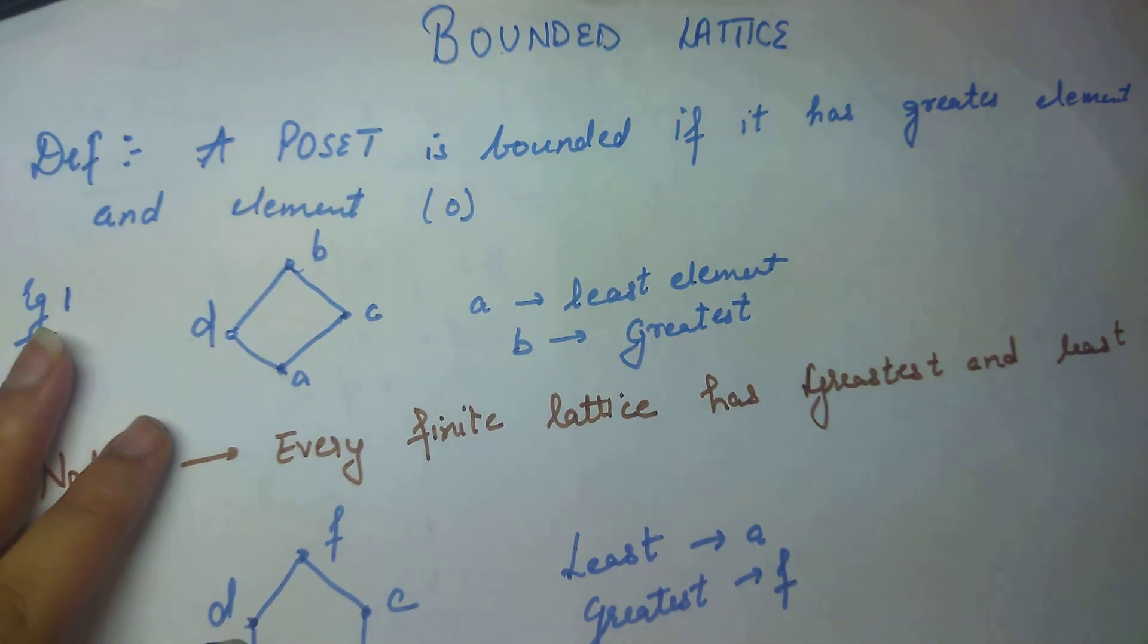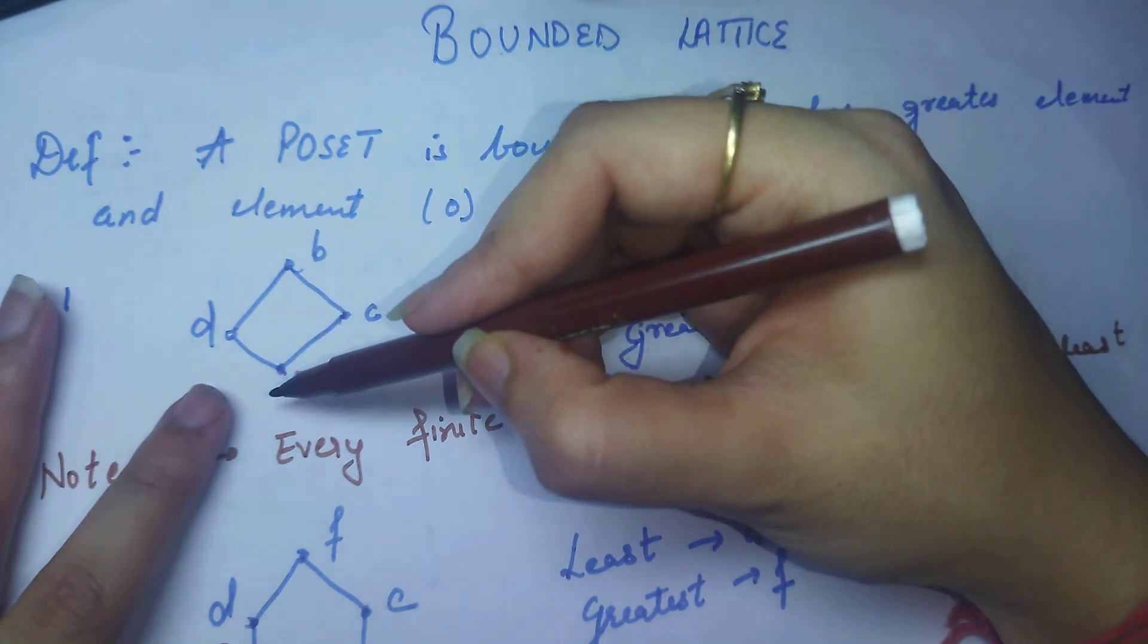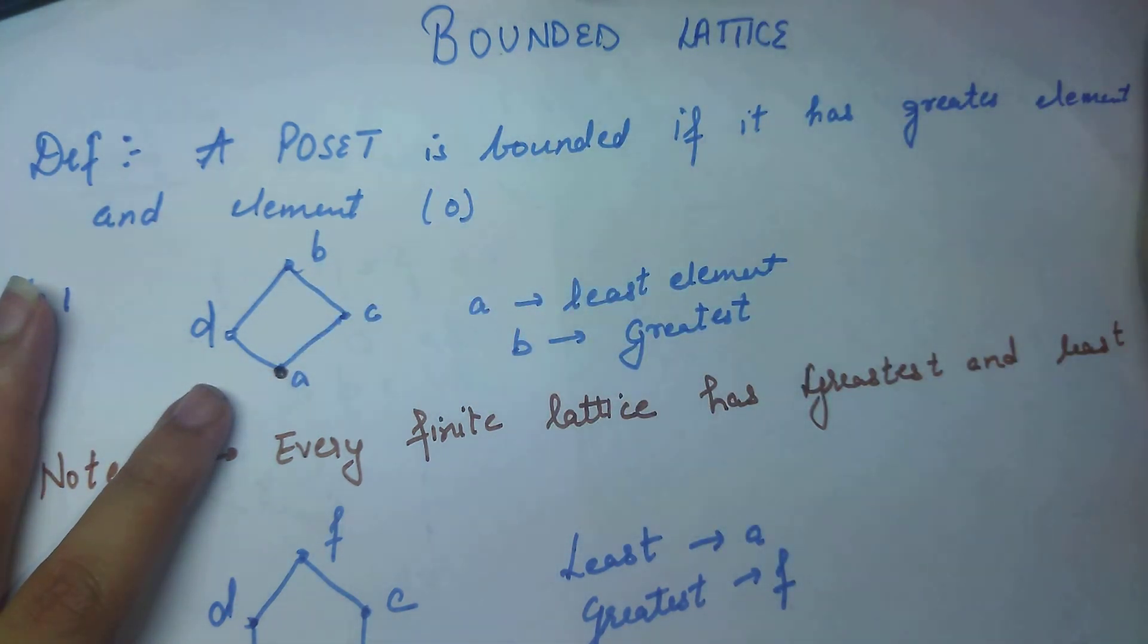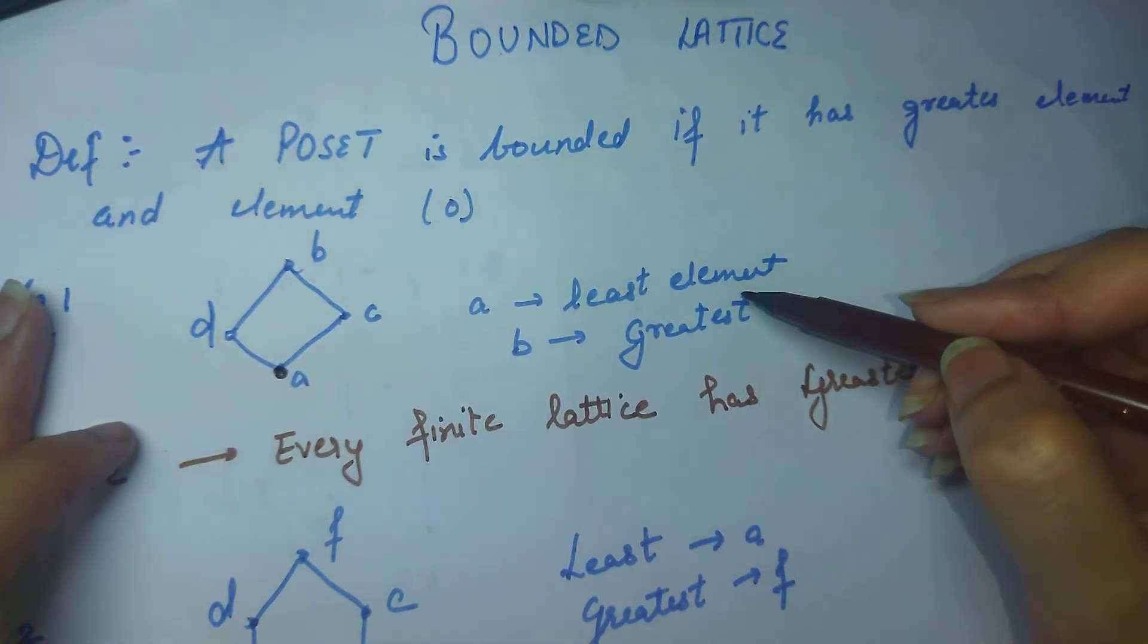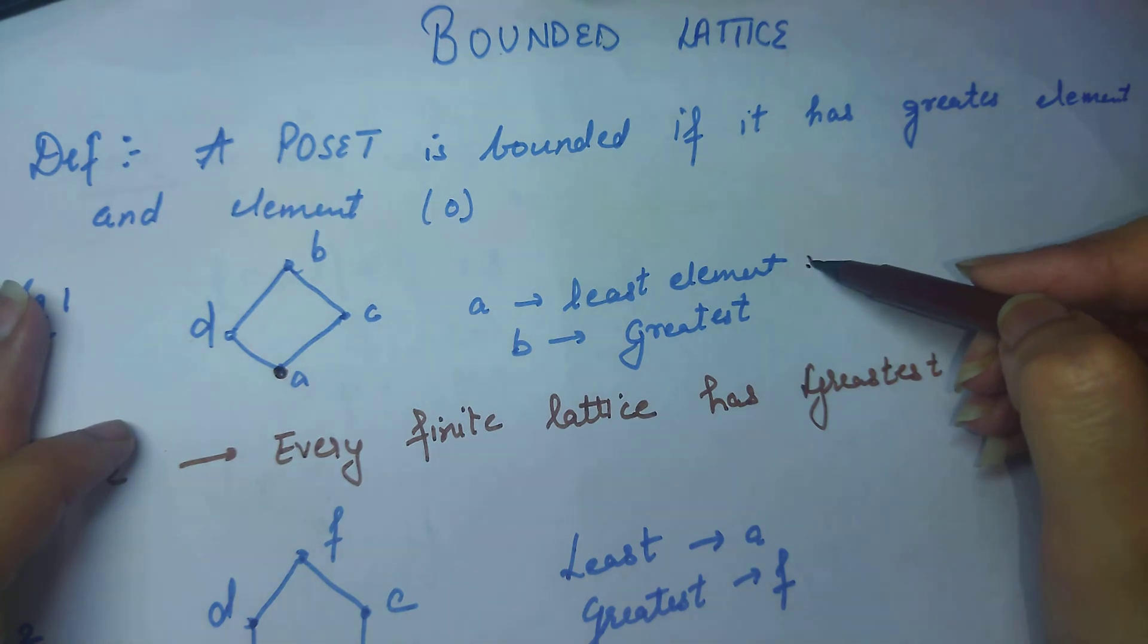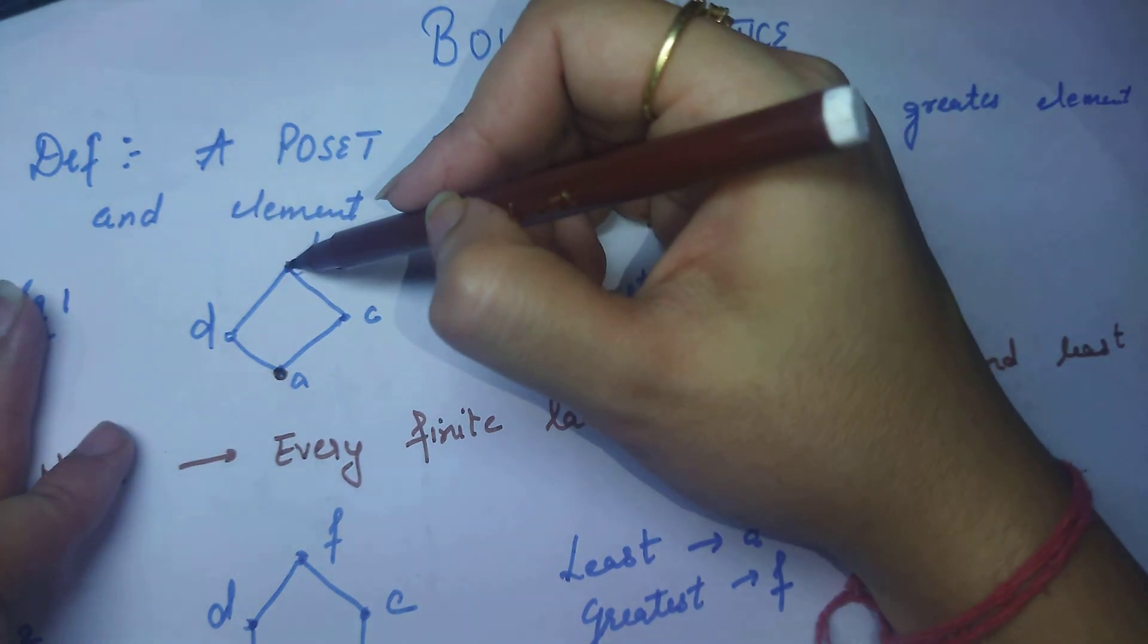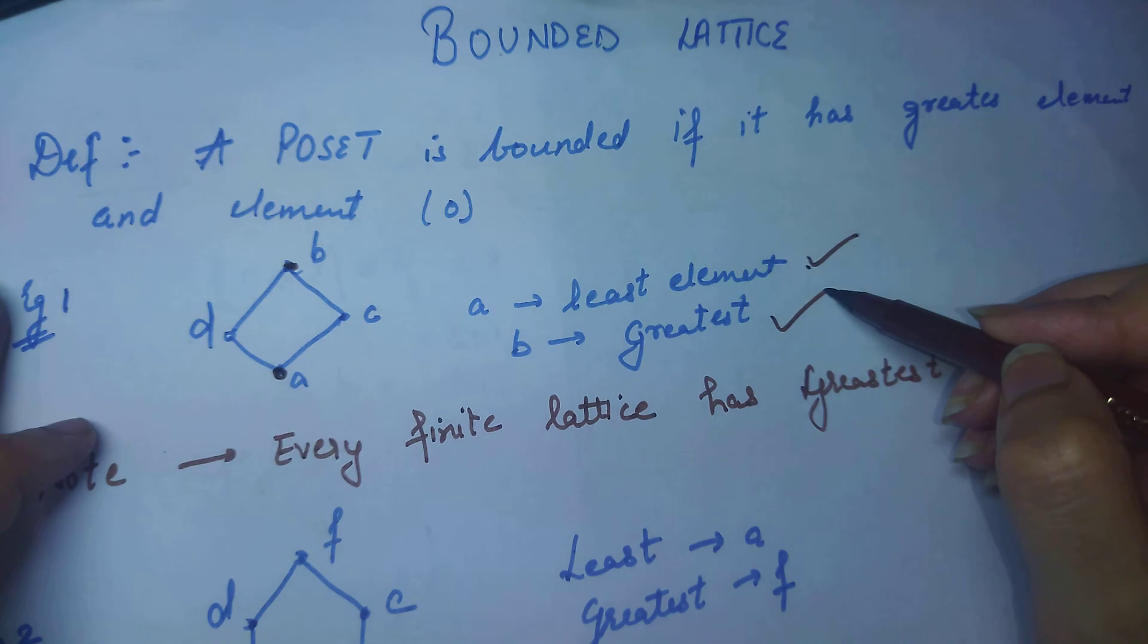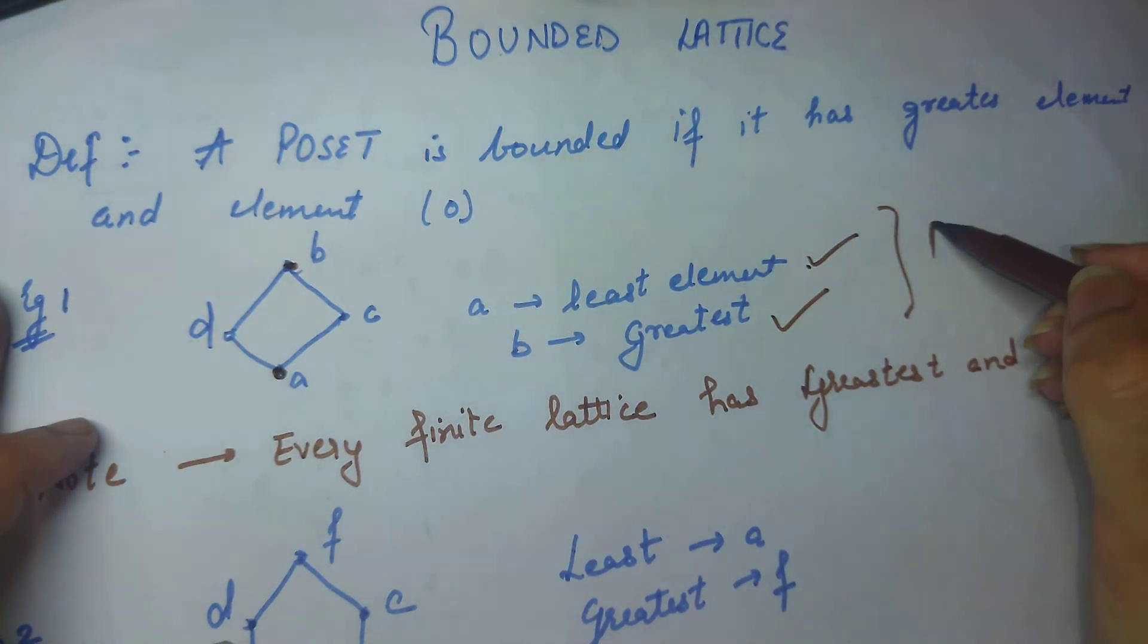Now see this element. What is your least element in this diagram? What is your lower bound? What is B? What is your upper bound? What is your bounded lattice?